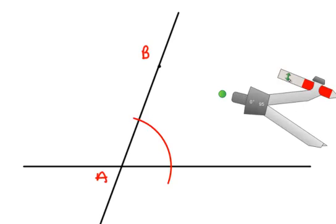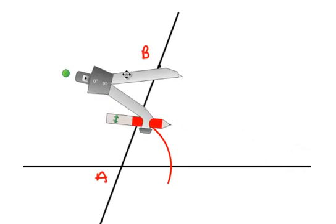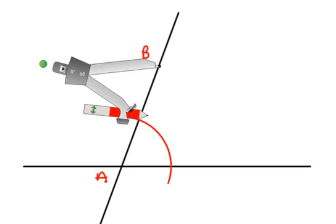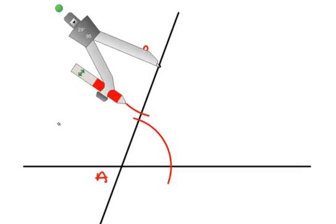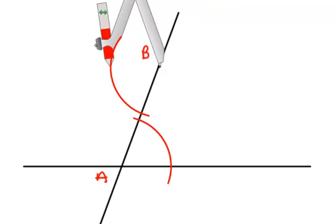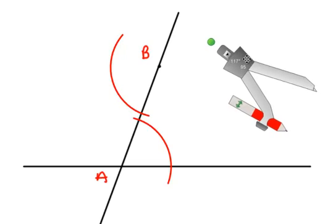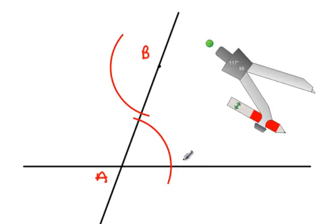I will then take my compass and place my compass point on point B now. And with the same radius, I'll create another arc, but this time on the left side of our transversal. And if you notice, the radius of both of those arcs are exactly the same.